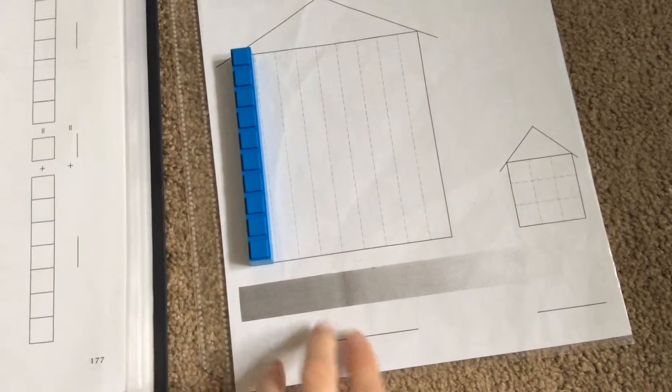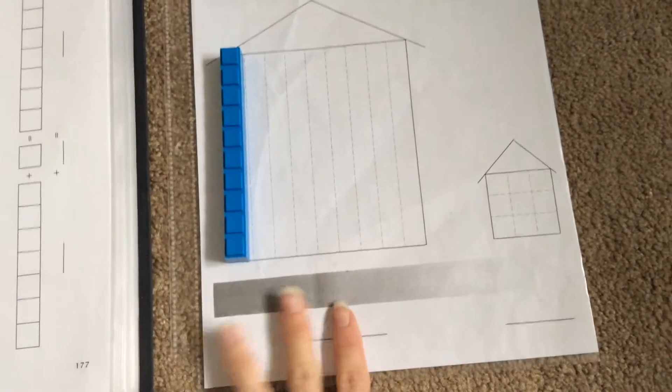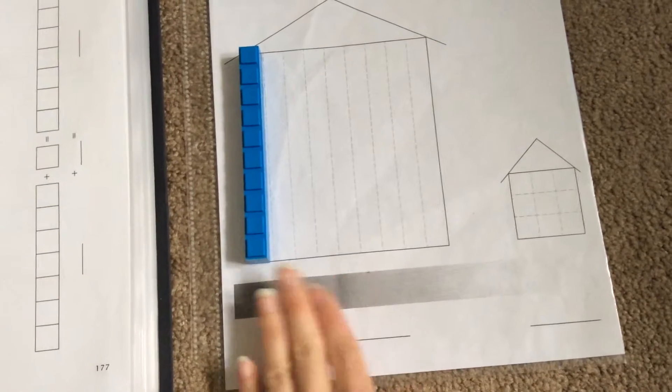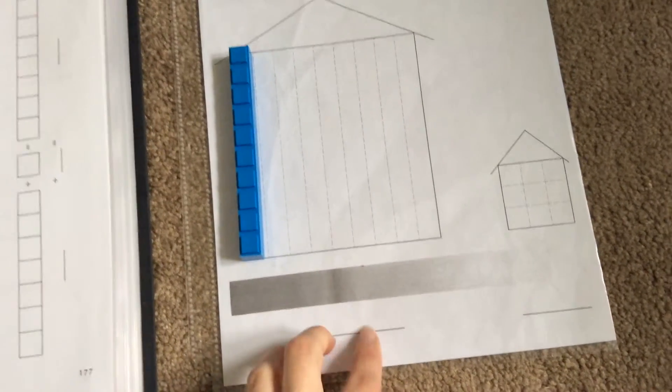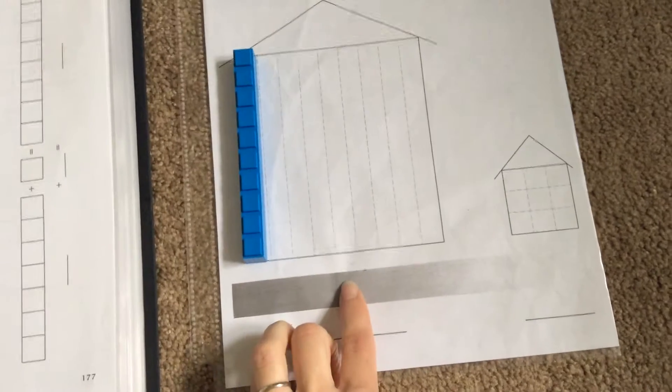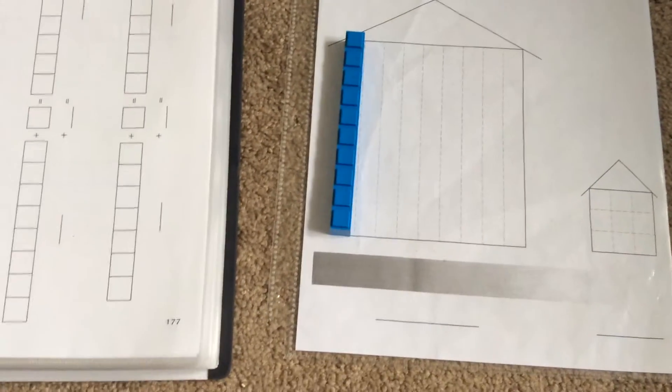You could laminate it, or maybe if you put some clear packing tape or something at the bottom of your poster board, and they can write on that with an erasable marker, a wet erase marker.